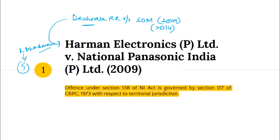What did K. Bhaskaran hold? It said that an offence under Section 138 would be constituted only when 5 acts are completed: first, a cheque is drawn; second, the cheque is presented to the bank; third, the cheque is returned unpaid by the drawee bank; fourth, the drawer gives written notice to the drawee demanding payment; and fifth, the drawee fails to pay within 15 days from the date of notice. K. Bhaskaran held that any court having jurisdiction over any of these 5 acts could entertain the complaint. This was overruled in Dashrat Rup Singh Rathore, which held that the ruling in Harman Electronics would be followed, and jurisdiction will be determined by Section 177 of CRPC — i.e., complaint to be filed where dishonour of cheque occurred.